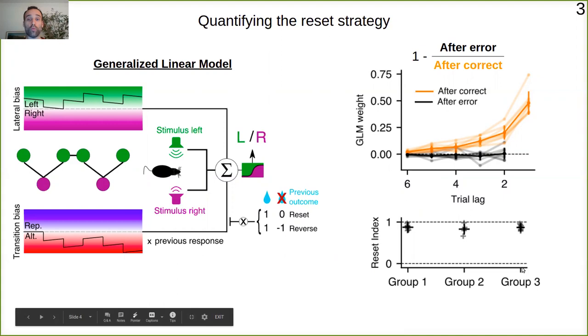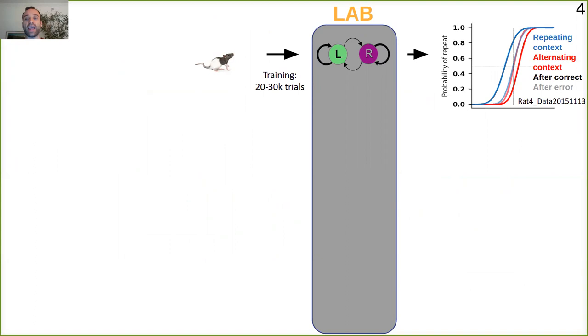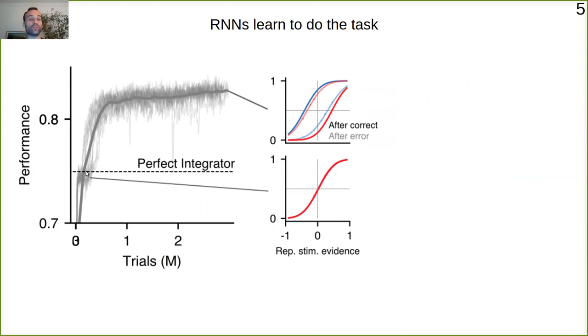So reaching this point we have rats that are trained for 20-30,000 trials and they reach this solution that is not optimal. So the first thing we did was to train directly our networks on the task and see how they did. As I'm showing here, networks are able to learn quickly to perform the task as good as the perfect integrator would do, and very soon as well they start using the trial history, and that's why their performance goes beyond that of a perfect integrator.